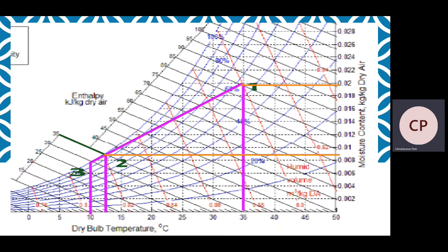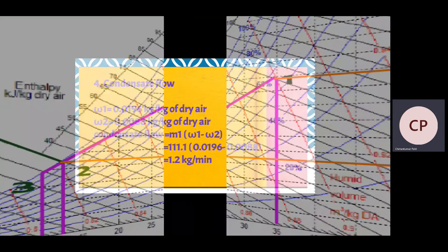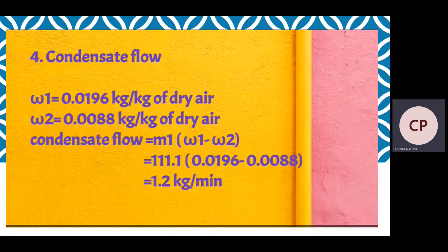Finally, we find the specific humidity at point 1 and point 2. Using orange lines extended to the moisture content axis (kg per kg of dry air): omega1 at point 1 is 0.0196 kg per kg of dry air, and omega2 at point 2 is 0.0088 kg per kg of dry air. The condensate flow is calculated as M1 multiplied by (omega1 minus omega2), giving 1.2 kg per minute.